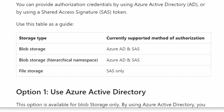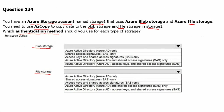Back to the question. For blob storage, we can use Azure Active Directory and shared access signature, so that answer is correct. For file storage, we can use only shared access signature token. Therefore, the correct statement is shared access signature only.